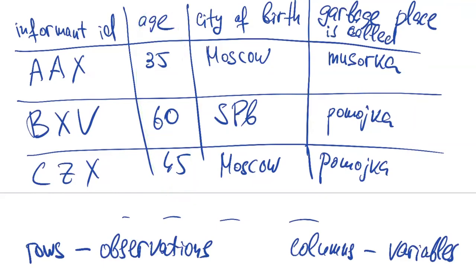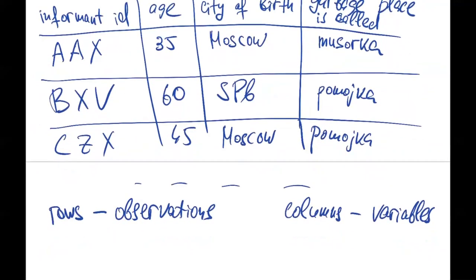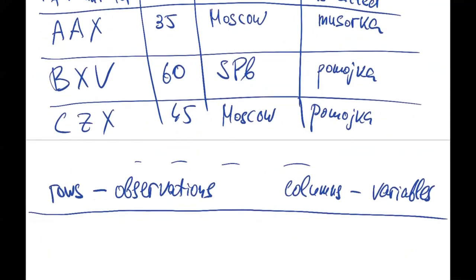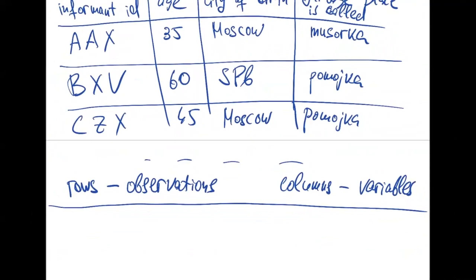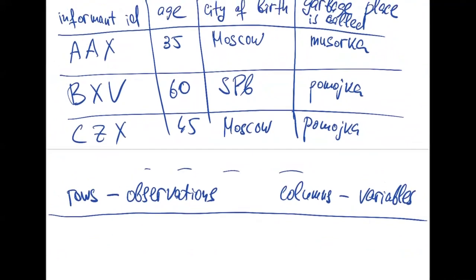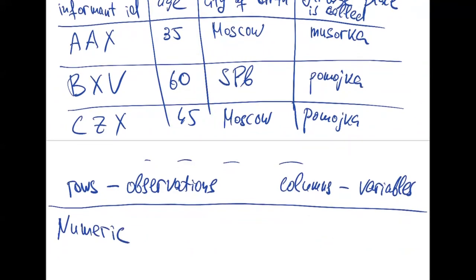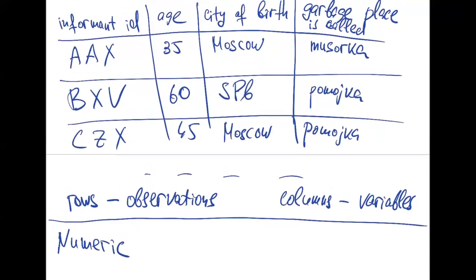There are several ways to classify variables. For example, we can have a variable like age, and this variable is numeric. This is our first data type: numeric variables. Sometimes people subdivide numeric variables into several subtypes.